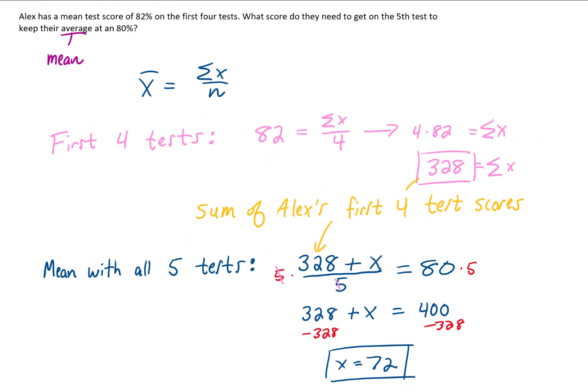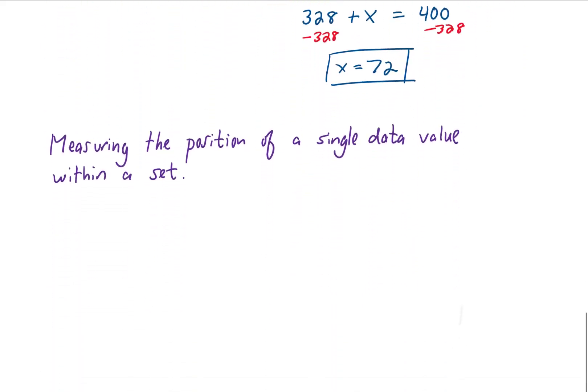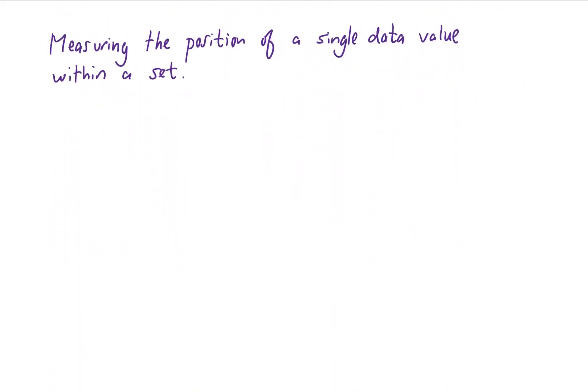So far in this video, we've talked about measures of center: the mean, the median, the mode, and the midrange. The last thing we want to do is talk about how we measure the position of a single data value within a big set of data. One way we do this is with quartiles.